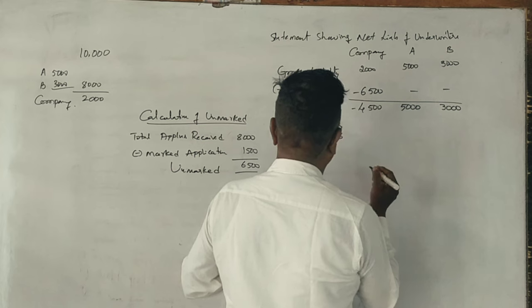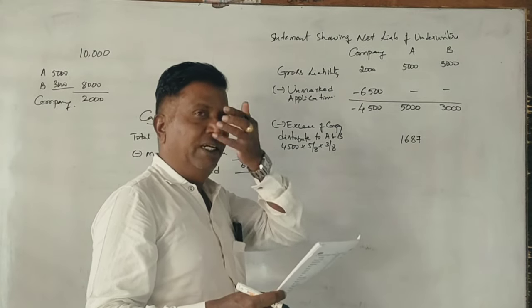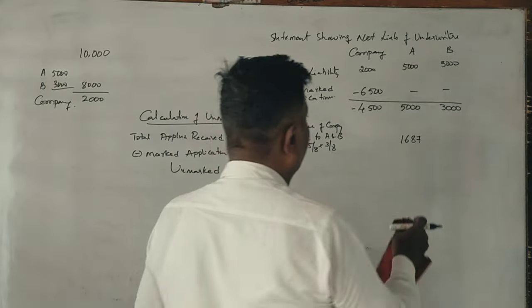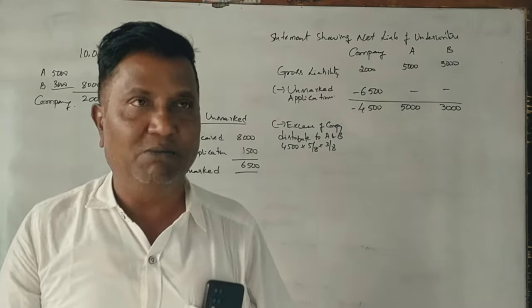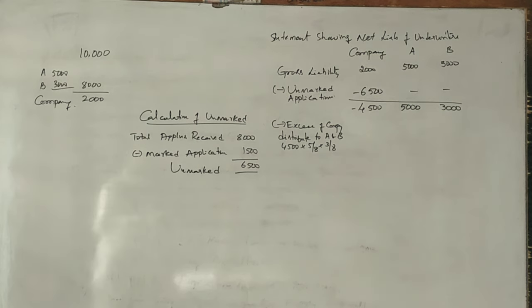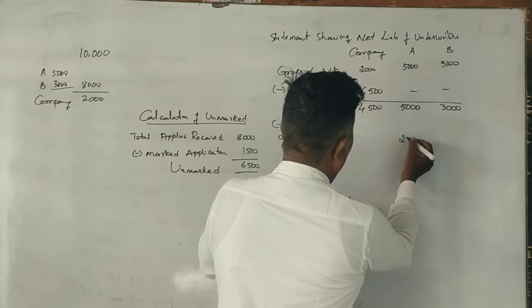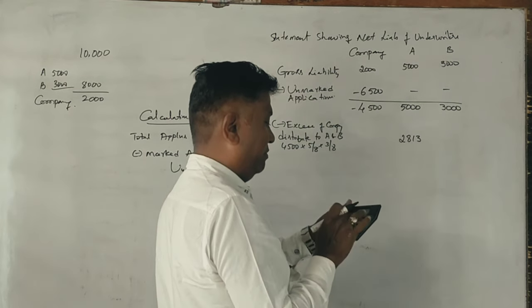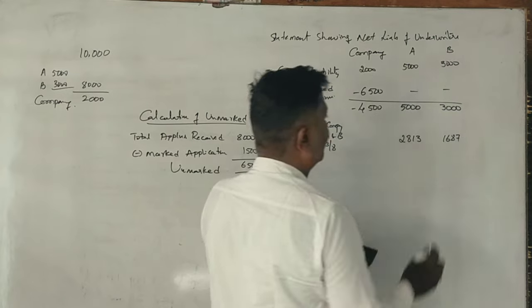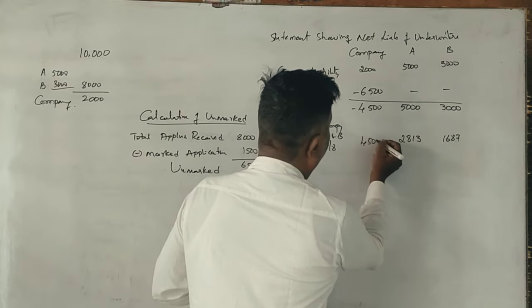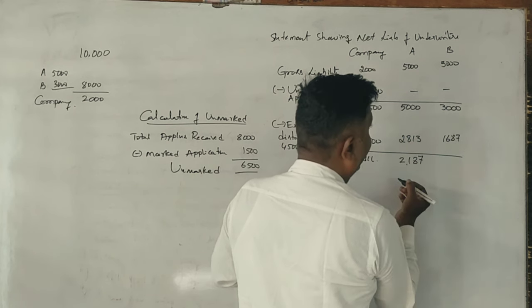A gets 1,687, B gets 1,688. Then 4,500 divided by 8 into 5 gives 2,813. Into 3 gives 2,187.